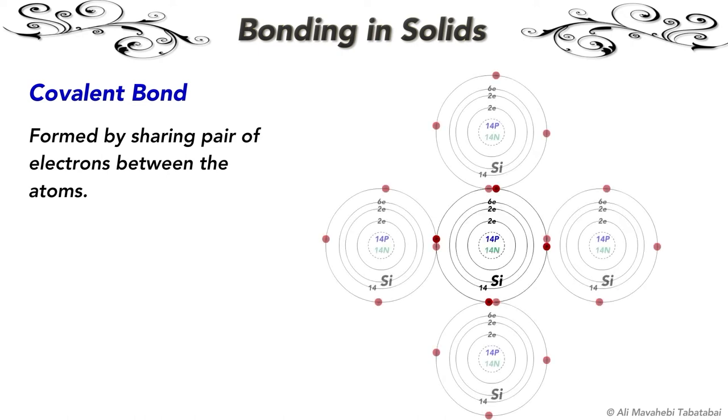Here on the right-hand side picture, you can see the covalent bond between silicon atoms. Each silicon atom has four electrons in its outermost shell and it needs four more electrons to complete its outermost shell to become stable. It gets these electrons by sharing four electrons, one each from its neighboring silicon atoms.